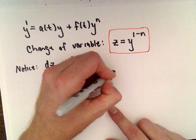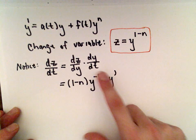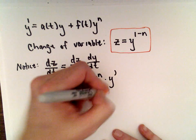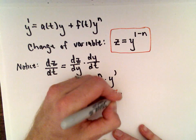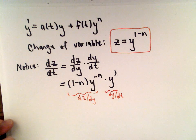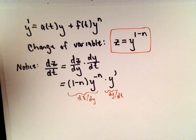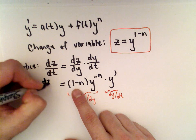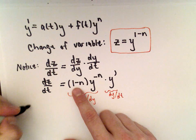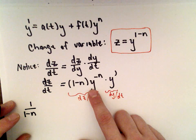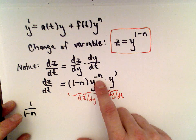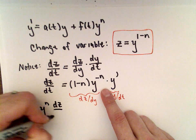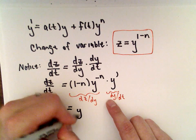And then we still have our dy/dt hanging out. Well, I'm going to rewrite the dy/dt as y', because that's what we have up here. So here's our dz/dy, and here's our dy/dt. Just using the chain rule, you see this, first semester calculus. So the first thing I'm going to do is I'm going to solve for y'. So if I solve for y', I could divide both sides of this equation by 1 minus n. To get rid of y raised to the negative n power, I could multiply both sides by y raised to the power of n. Then I'm going to be left with dz/dt on the left side still, and that's going to equal y'.